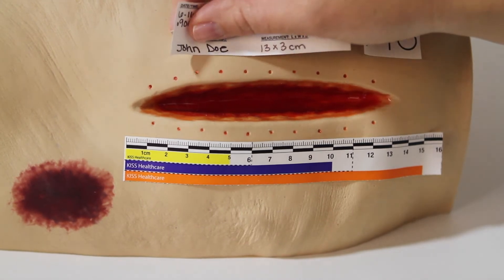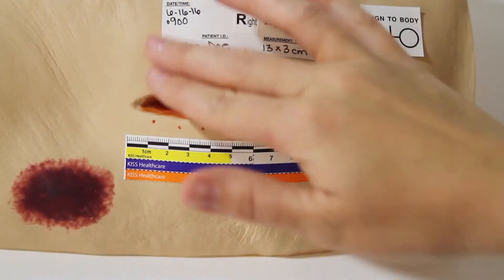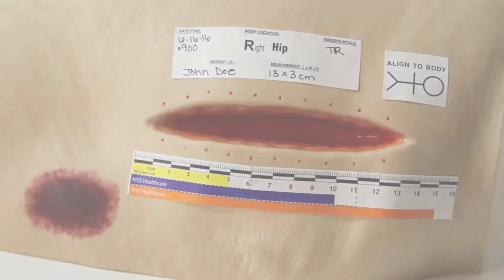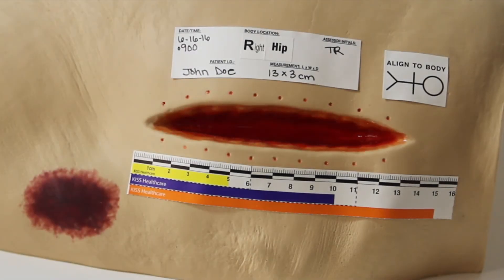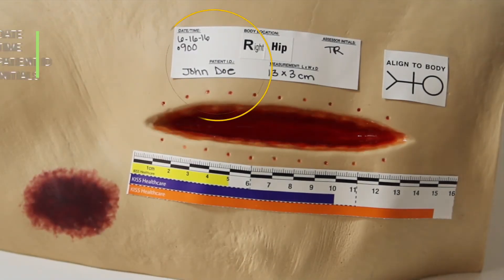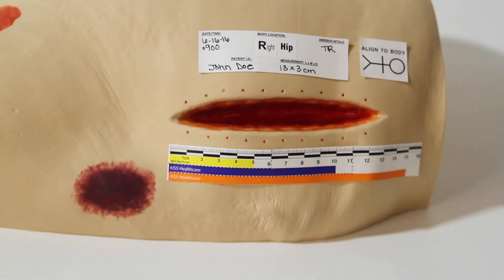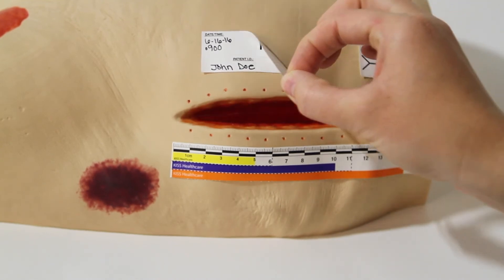A sharp fine tip permanent marker works best. Include the date, time, patient ID, and your initials. You are ready to take your picture. After you have taken your photo, remove the ruler, note label, and stick figure from the patient.